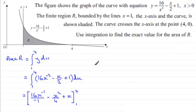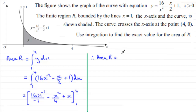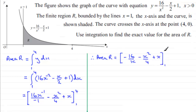Carrying on, our area R equals — before substituting in, let me just clean that up. We've got minus 16 multiplied by x to the minus 1, which is 1 over x, giving us minus 16 over x. Then minus x squared over 4, then plus x, and that is evaluated between the limits 1 and 4.